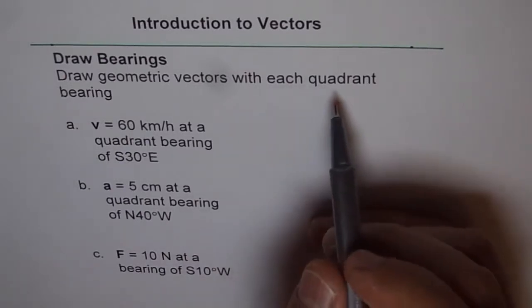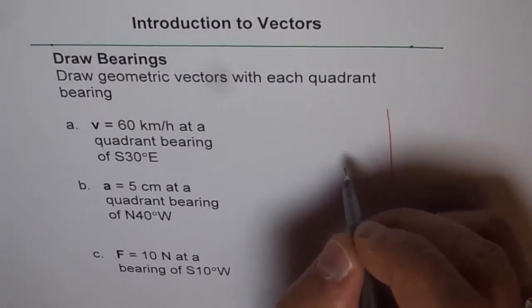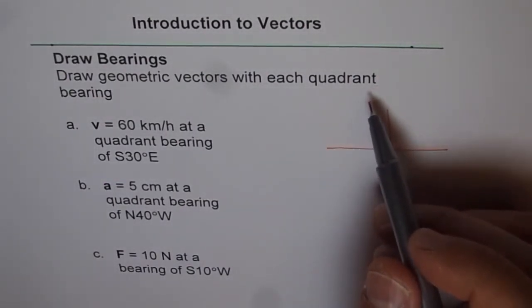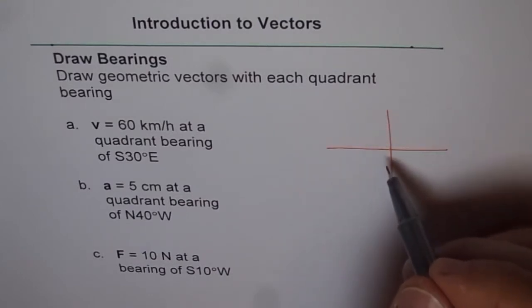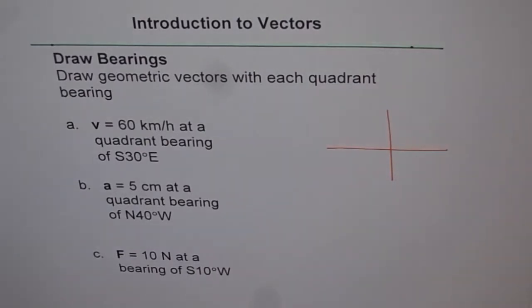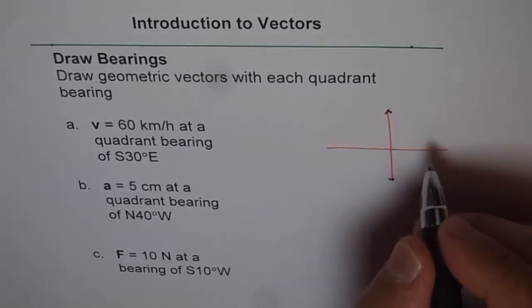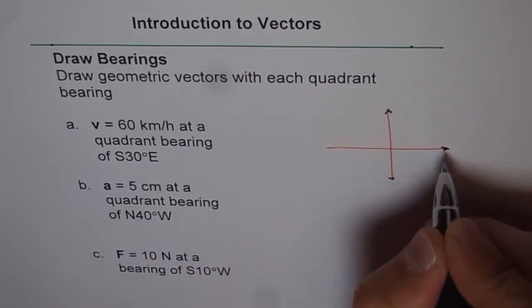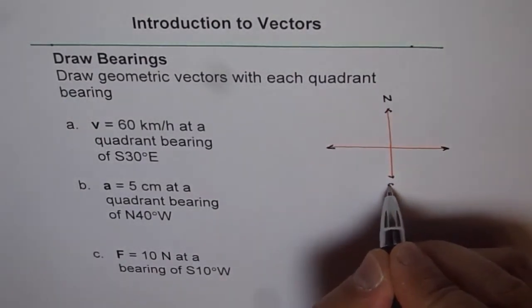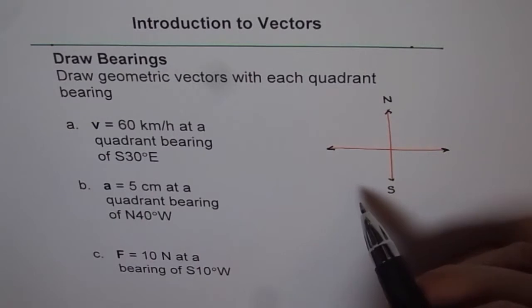As a reminder, a quadrant bearing is a way to tell in which direction the vector is of the north-south line. That is what quadrant bearing is. And in quadrant bearing, the angle is always from 0 to 90 degrees — that is a key thing. We have to go off from the north-south line; we could go east or west, and quadrant bearing helps us to represent that.